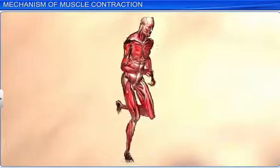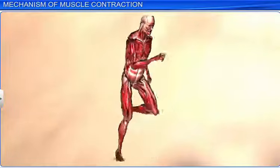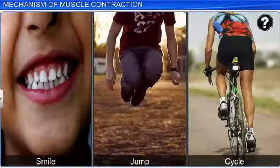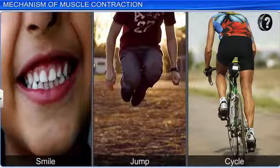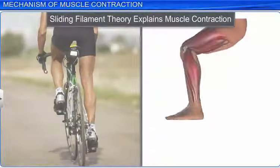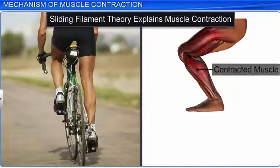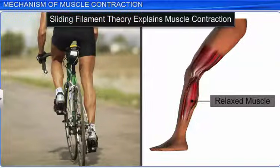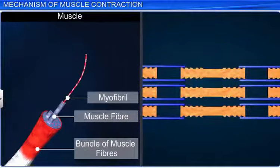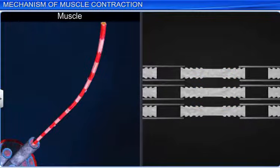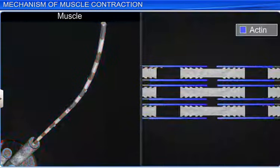Muscle is a special organ that transforms chemical energy into movement. How do you think our muscles contract when we smile, jump, or cycle? The mechanism of muscle contraction is well understood by the sliding filament theory. According to this model, muscle fibers contract when thin or actin filaments slide over the thick or myosin filaments.